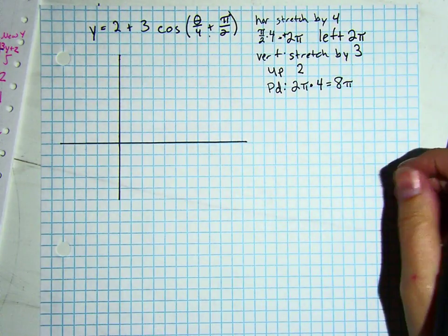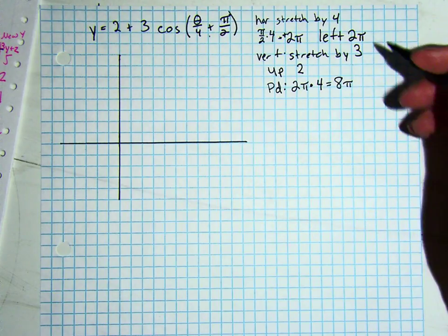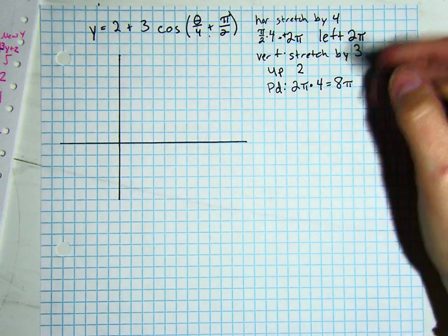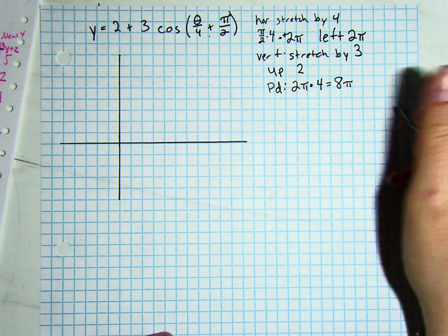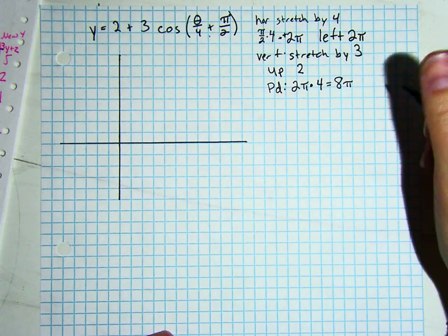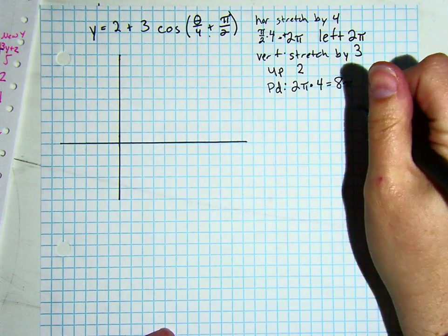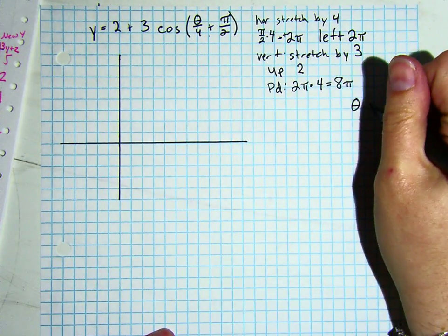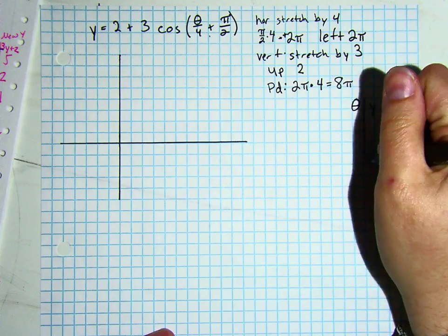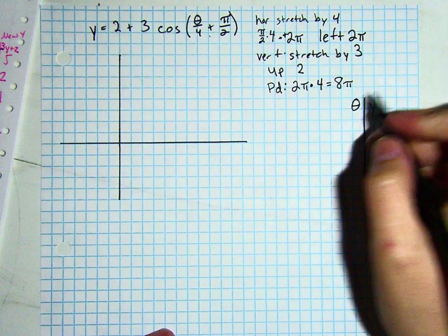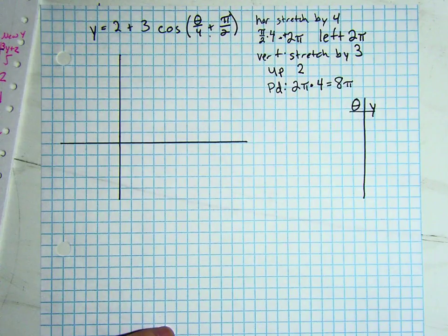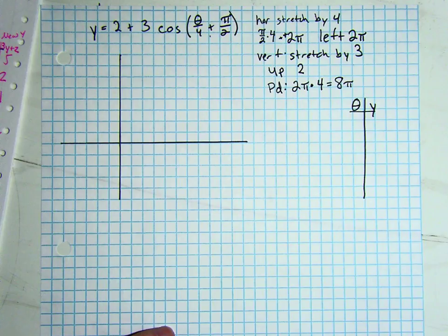We are going to take our information here now and make a two-way table of theta and y, and we are going to do our five important points. Our first important point occurs at 0, 1 for cosine.